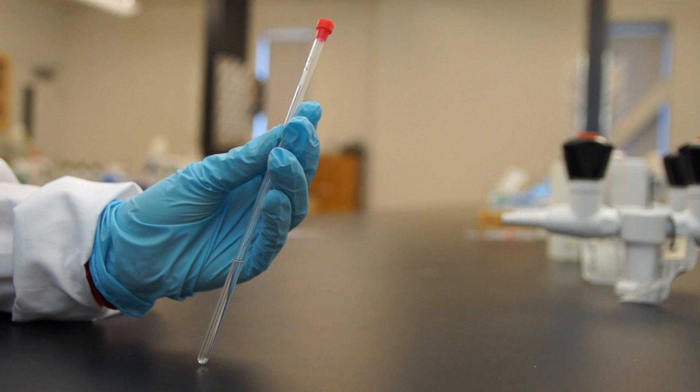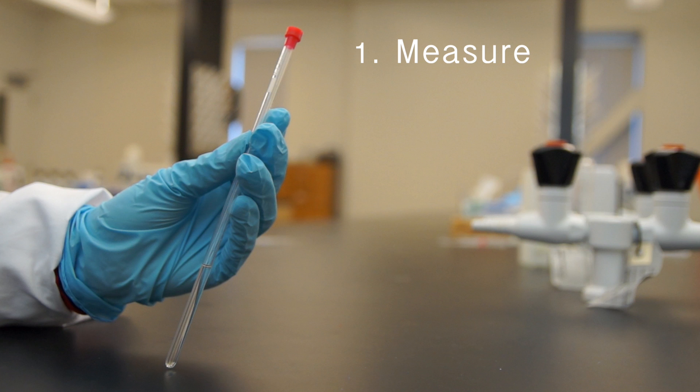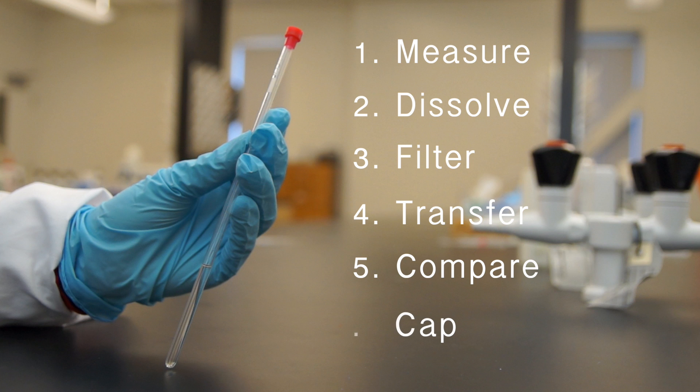Here's what your finished sample should look like. To summarize: first measure out your sample, then dissolve it in the NMR solvent, filter it if necessary, transfer it to the NMR tube, compare the solvent height to that of the solvent height guide, and then finally cap your tube properly.